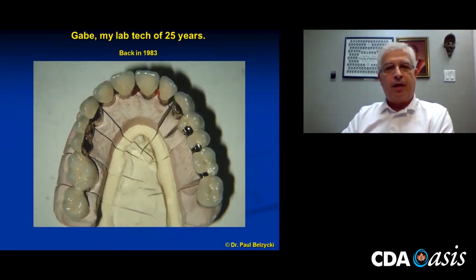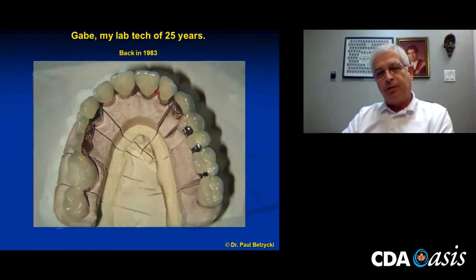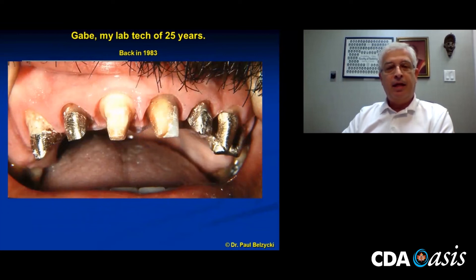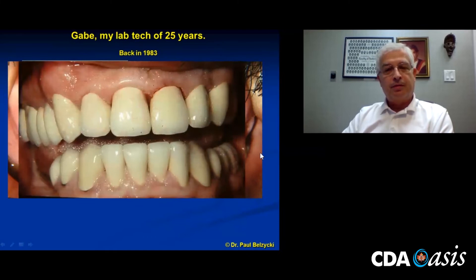This is Gabriel's case — going into his mouth. This was done back in 1983, off of Ektachrome slides, before digital photography. The case was cemented in. I don't have a ton of pictures because we just didn't take them back then. Some of the teeth were endodontically treated, had cast post cores, so we strapped up most of the upper arch and did an upper reconstruction. We also fixed up the lower teeth at the time.